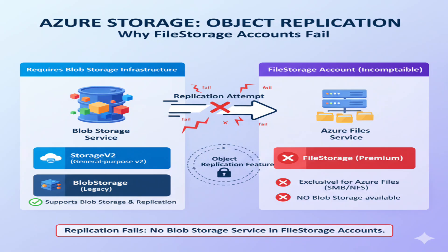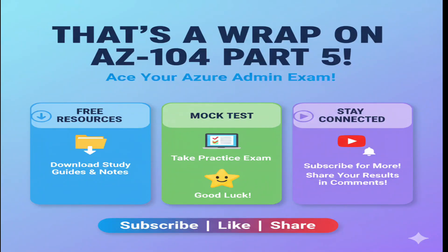File storage accounts only support Azure Files service for enterprise file sharing scenarios. Since object replication requires blob storage capabilities to copy images and other unstructured data between accounts, file storage accounts simply don't have the necessary blob storage infrastructure to support this feature. The replication would fail because there's no blob storage service available in file storage accounts. That's a wrap on AZ-104 Part 5. Download your free resources, take the mock test, and ace your exam. Subscribe for more cloud certifications and share your results in the comments. Good luck.